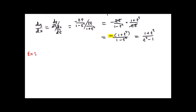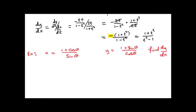Next example. x equals 1 plus cos theta over sin theta, y equals 1 plus sin theta over cos theta. Find dy dx. A little bit more work to do this time — the quotient rule is just that little bit messy, it takes a little bit longer to do.